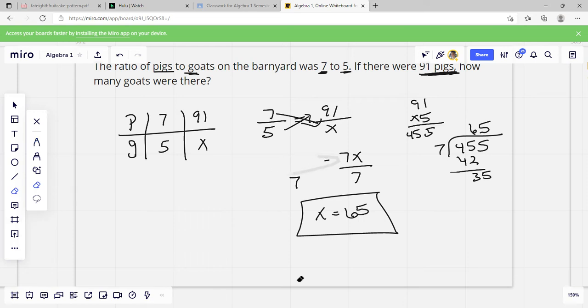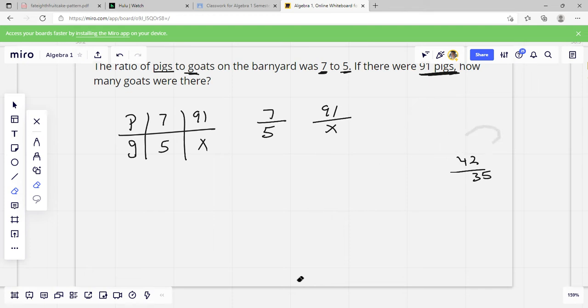Another way to do it, once we've got our ratio figured out, our equal sign is in there, we know that the ones that are diagonal, we multiply. So we're going to need 5 times 91. And then we're going to divide by the one that is diagonal from the X. Divide by 7. That's how you would come up with that answer that way.